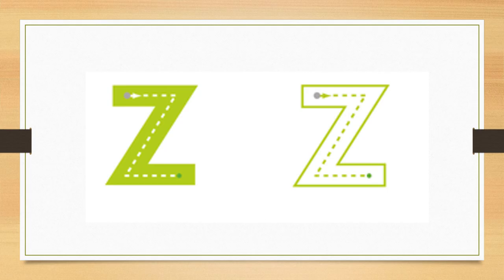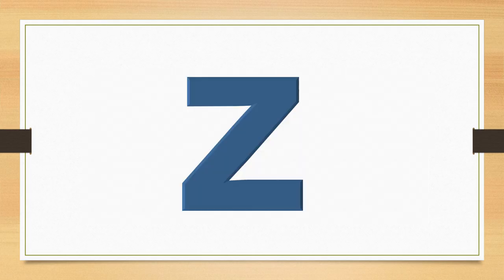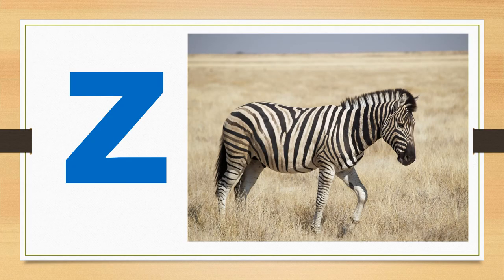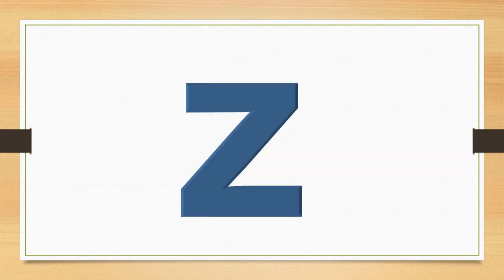Try on your own first, and then your teacher can help you. This is the lowercase letter Z. The letter Z says Z. Z says Z. The word zebra starts with the sound Z. Z. Zebra. Z. What sound does the letter Z make?